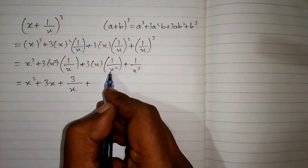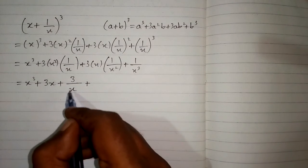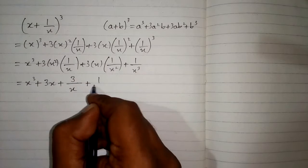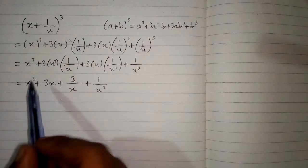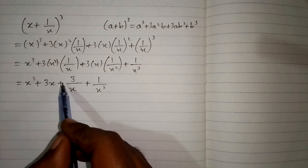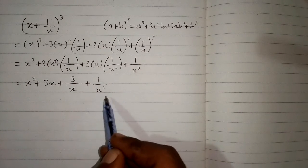Because of the higher power in the denominator, this x is in the denominator. Then we have 1 upon x³. So the cube of (x + 1/x) is x³ plus 3x plus 3/x plus 1/x³.